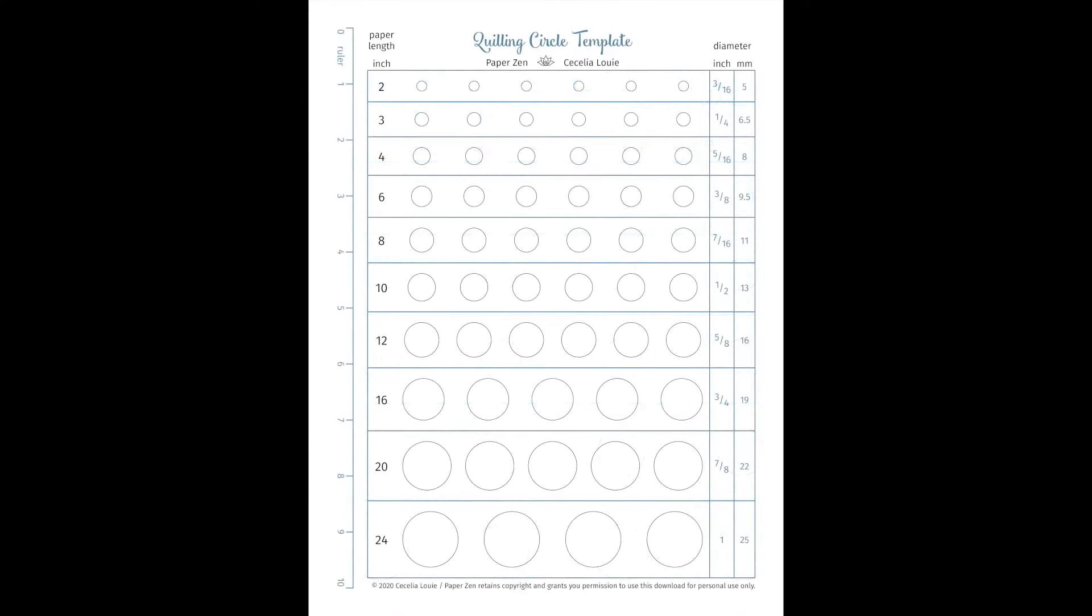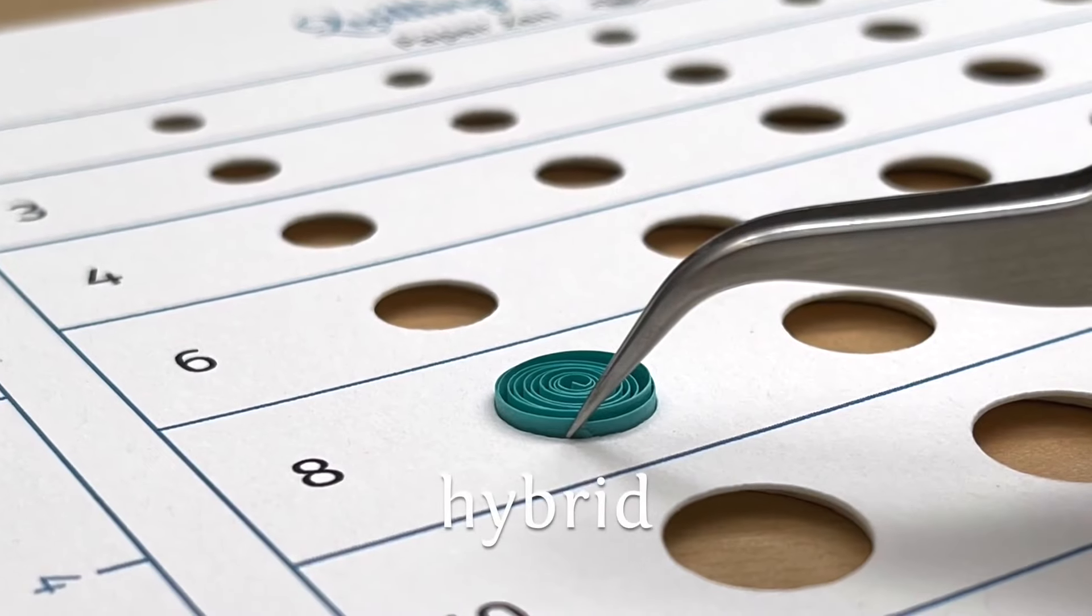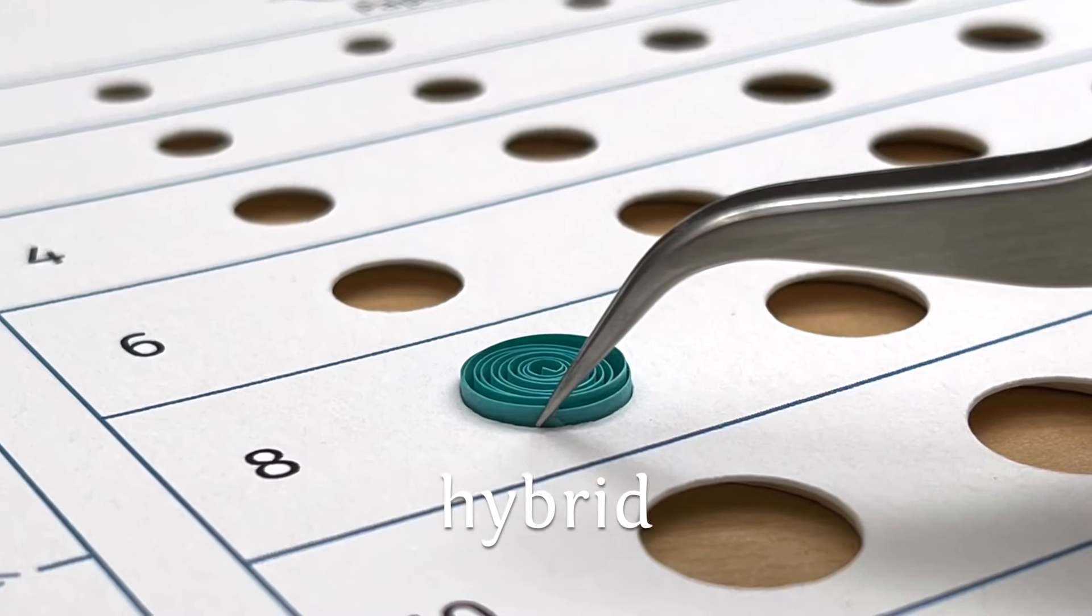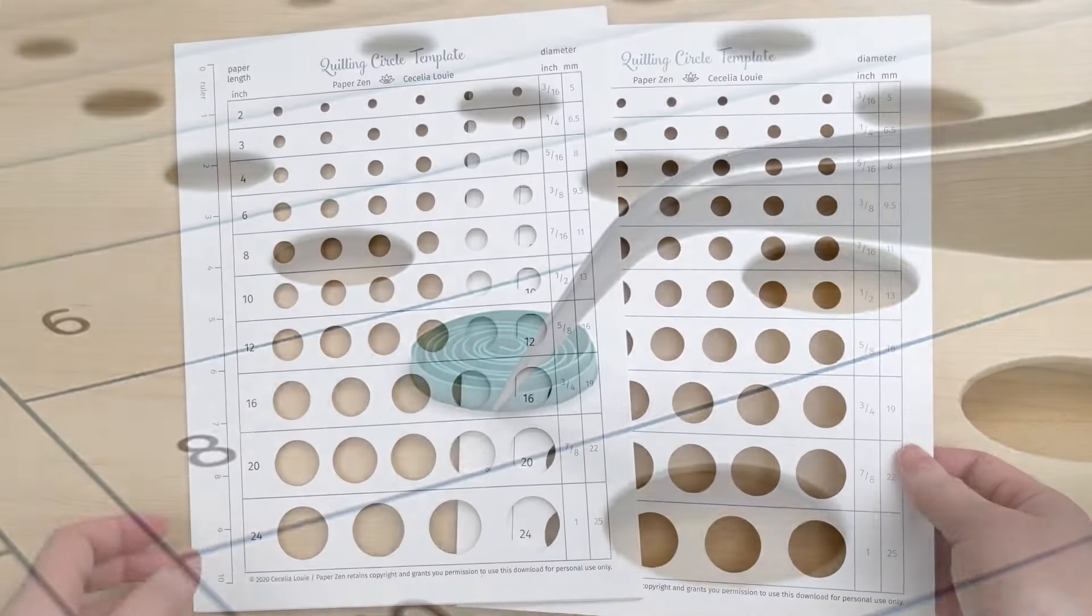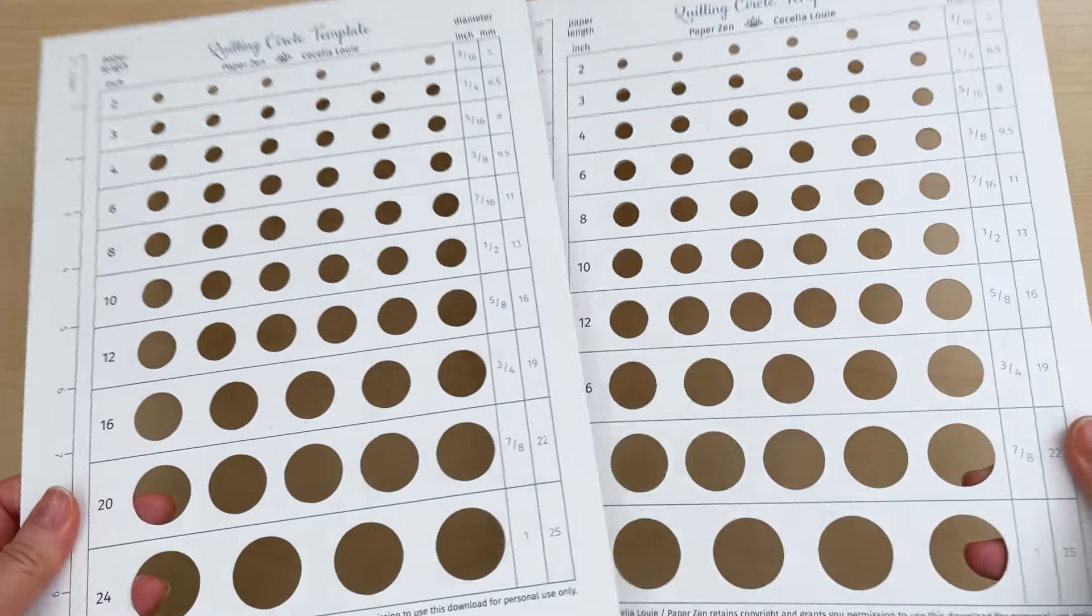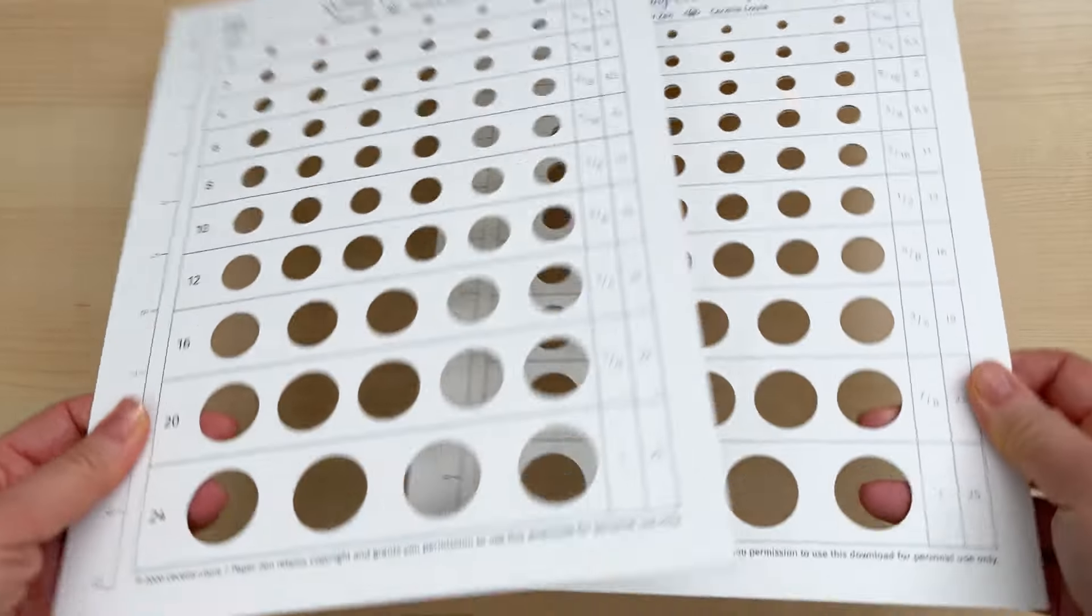So if you happen to be a hybrid crafter like me, loving both quilling and die cutting, please leave me a comment with the word hybrid down below, so I know I'm not alone. Okay, let's get started on how to make this.